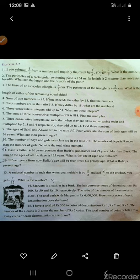Question number 20: The perimeter of a rectangular swimming pool is 154 meters. The length is two more than twice its breadth. What are the length and the breadth?